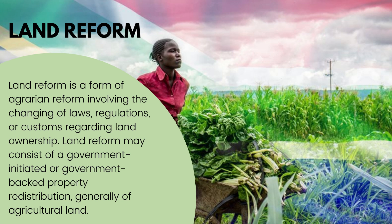The three different components are: first, land restitution — this is the return of land or provision of compensation to those who had their land taken away from them in the past. Second, land redistribution — this means to address previously discriminatory apartheid policies and to ensure that poor or previously disadvantaged people have access to land, mainly for agricultural or residential purposes. Third, tenure reform — to improve the security of tenure of people occupying rural or semi-urban land.